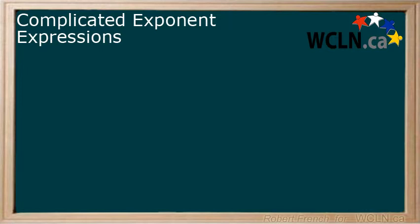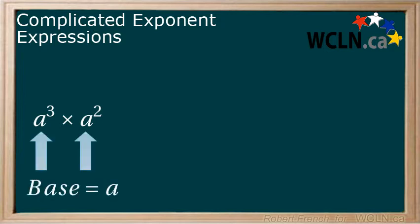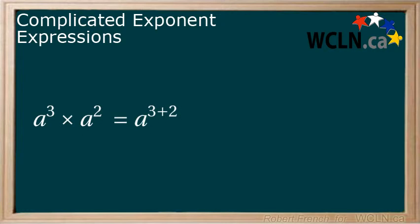First, we are going to look at a quick example where the base is a variable: a to the power of 3 multiplied by a to the power of 2. All of the rules that we learned still apply here. We are multiplying two powers with the same base, and therefore we can add the exponents together to get a to the power of 5.